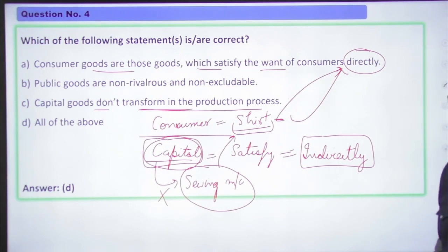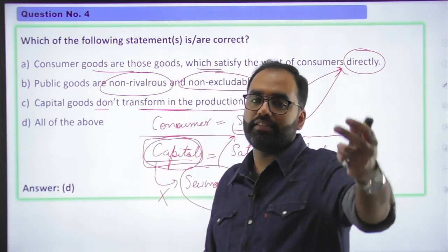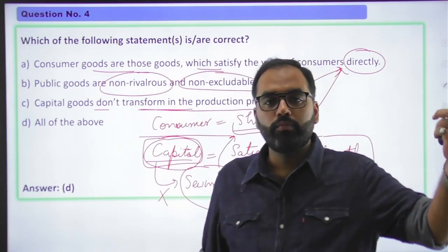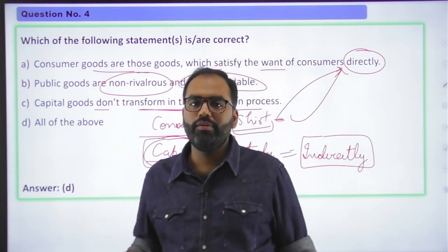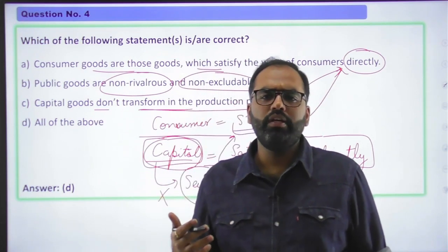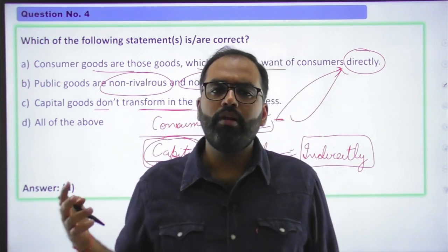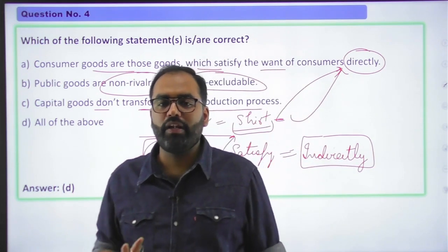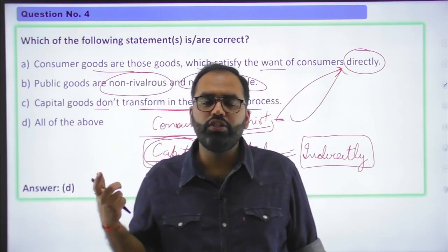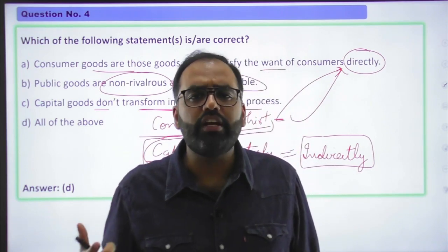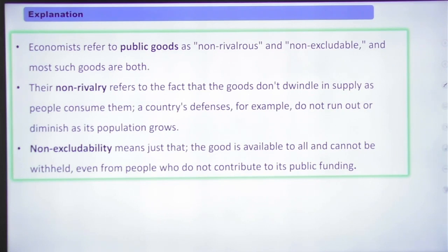Public goods are non-rivalrous and non-excludable. If you remember an example, there is a public park or the public street lighting system. That is, it is non-rivalrous also. You can read this in detail.